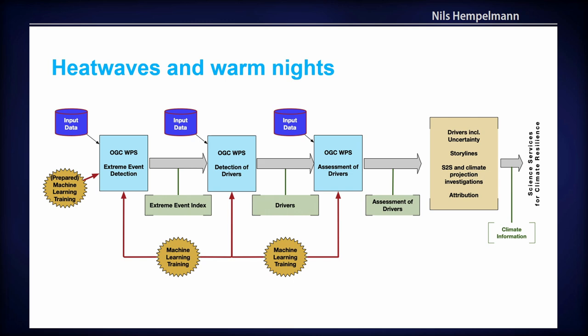Another example addresses the challenge of data pipelines for heat waves and warm nights. There are web processing services with multiple steps: first, detection of the event using an index defined by machine learning algorithms; then, once the event is detected, piping through a large amount of data to detect the drivers — understanding why the extreme event occurred, such as whether a heat wave is driven by soil moisture, the westerlies, or other factors.